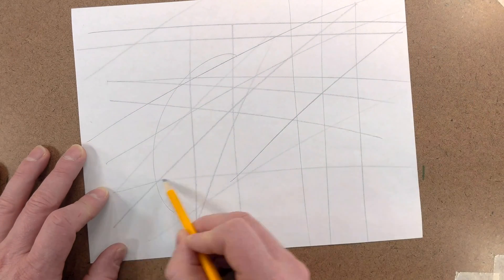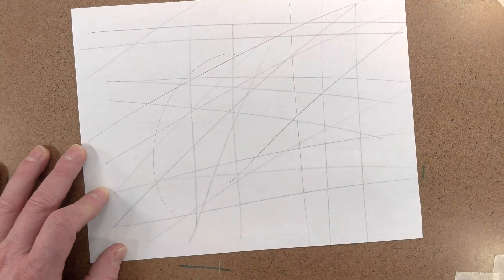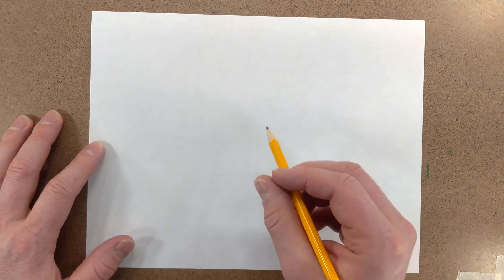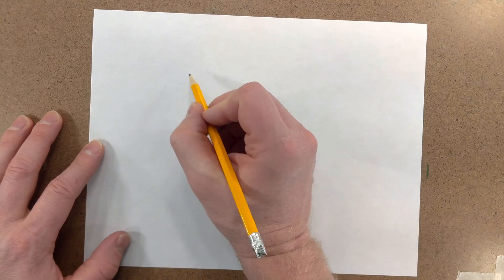Remember, keep your wrists still, your elbows still, and move from the shoulder. Once you can draw random straight lines on the page, now we need to be able to draw straight lines in between two points.